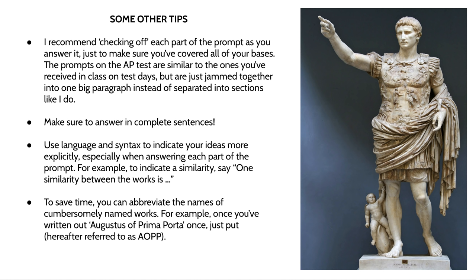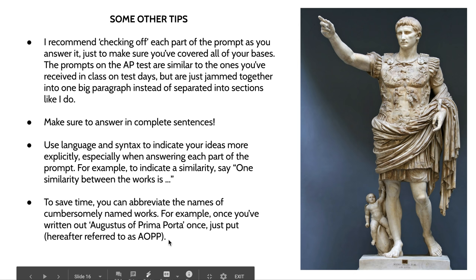When describing a similarity, you can say 'one similarity between the two works is...' or 'one difference between the works is...' To save time, especially with cumbersomely named works, you can write out the full name once and then put 'hereafter referred to as' followed by an abbreviation that makes sense to the reader. For example, Augustus of Prima Porta would just be AOPP.